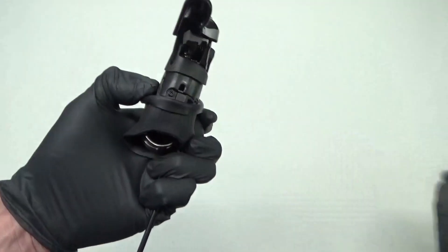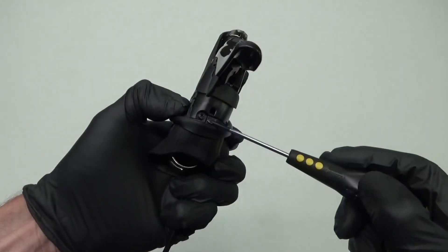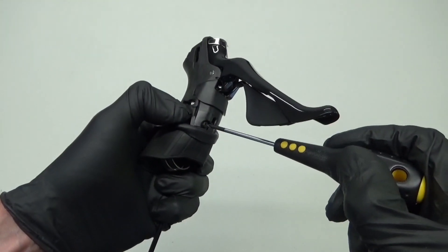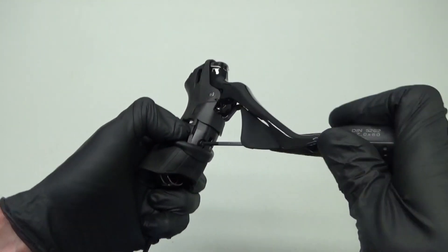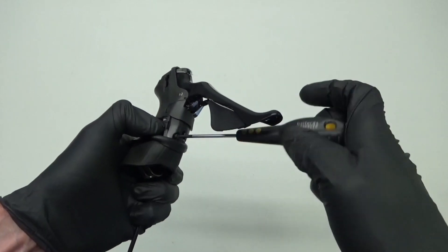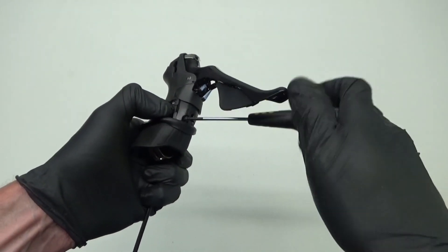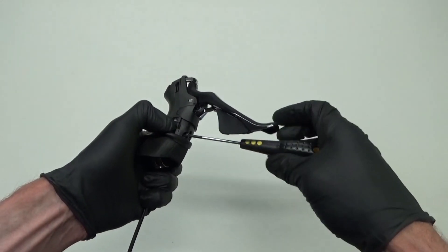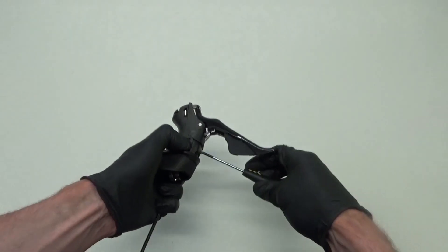And then if you see there, the star screwdriver bit. Just locate that and remove that out of the way. Just be careful not to lose it. Get that right out.